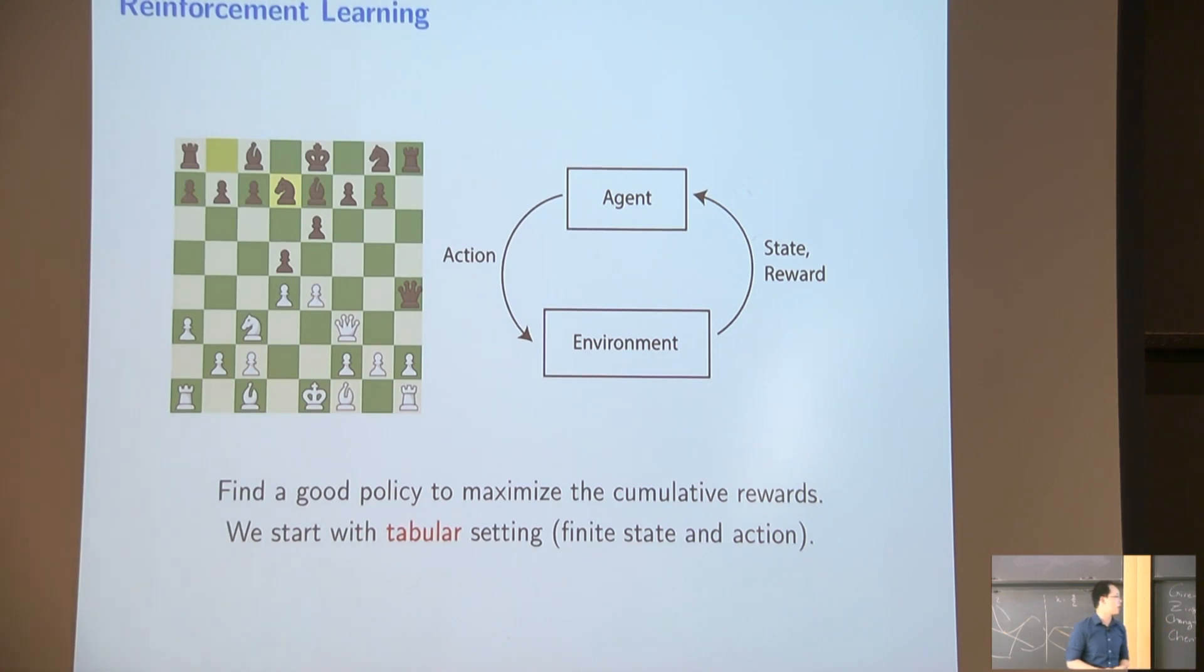So for the beginning of this talk, I will focus on a tabular setting. Just remember, tabular setting is an easier setting, where we assume we have a finite number of states and actions, so that the number of states and actions is very small. Like this chess game, you only have a finite limited number of states you can possibly be there. And the actions also, you have a very limited amount of.